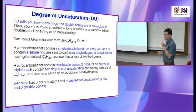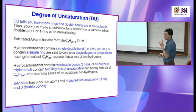For another example: numbering 1, 2, 3, 4, 5, 6 — it is 1,3-hexadiyne.